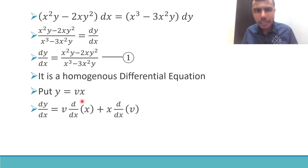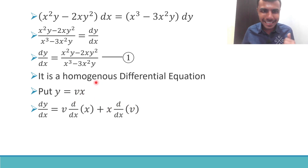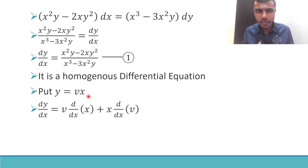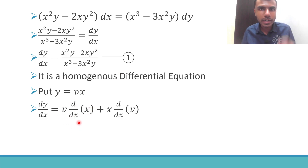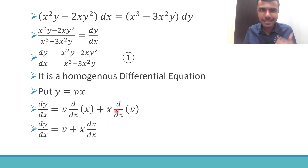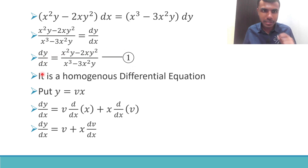...v times the derivative of x plus x times the derivative of v. Because here I have v times x — it's a product of two things, v and x — so I need to use the UV rule of differentiation. Derivative of x is 1, so v times 1 is v. I get dy/dx equal to v plus x·dv/dx.